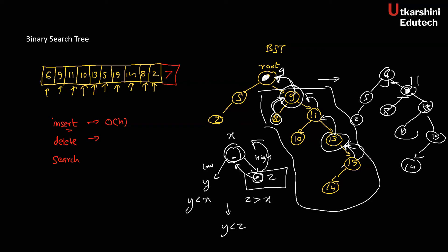For searching, I check at the root: not there. If the target is greater than the current node I go right, if smaller I go left. I keep comparing at each node — greater, right; still greater, right; still greater, right; now smaller, go left. The binary search tree has 'binary search' in its name for exactly this reason. In the worst case, I check from root to the deepest leaf. That's Θ(h) as well.